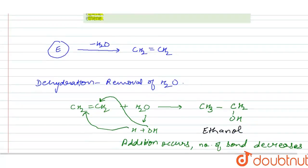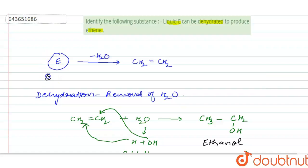So liquid E is ethanol, and after dehydration of ethanol we will be left with ethene.